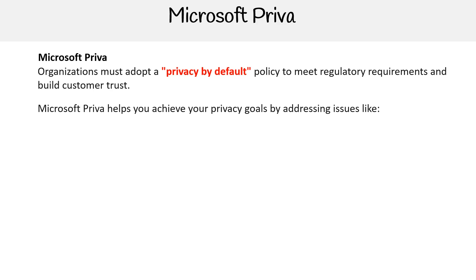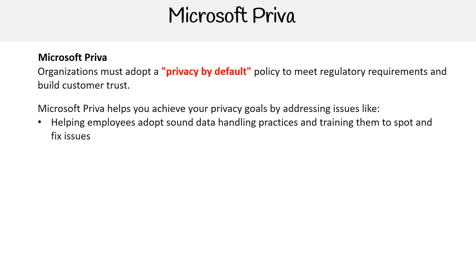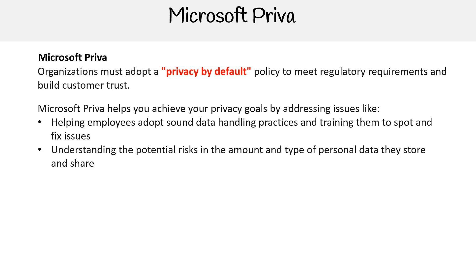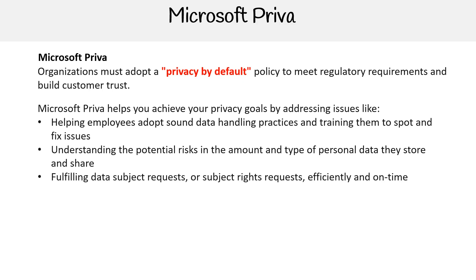Microsoft Priva helps you achieve your privacy goals by addressing issues like helping employees adopt sound data handling practices and training them to spot and fix issues, understanding the potential risks and the amount and type of personal data they store and share, and fulfilling data subject requests or subject rights requests efficiently and on time.